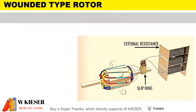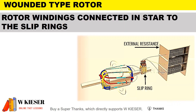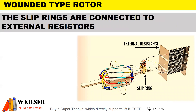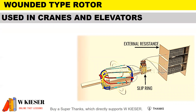The wound type rotor, also known as a slip ring rotor: the rotor windings are connected in star to the slip rings. The slip rings are connected to external resistance, and they are mainly used in cranes and elevators.